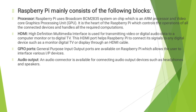GPIO ports — General Purpose Input Output ports — are available on Raspberry Pi, which allow the user to interface various input/output devices. An audio connector is also available for connecting audio output devices such as headphones and speakers.